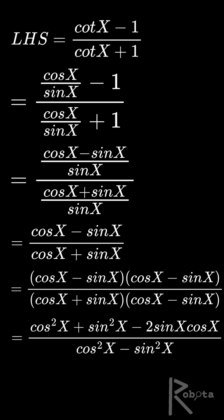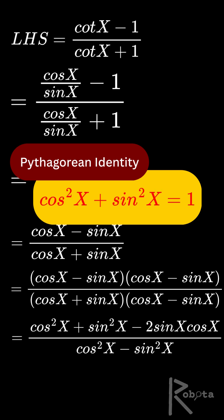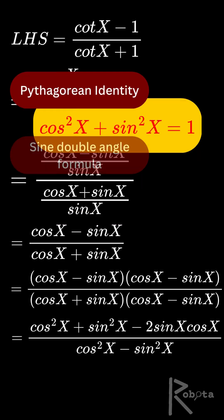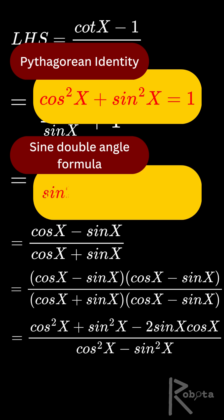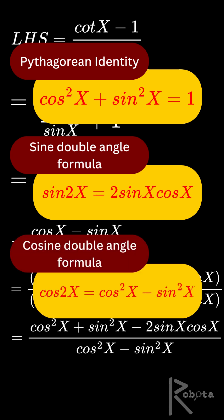Now use the identities. By Pythagorean identity cos squared x plus sine squared x becomes 1. By sine double angle formula 2 sine x cosine x becomes sine 2x. By cosine double angle formula cos squared x minus sine squared x becomes cos 2x.